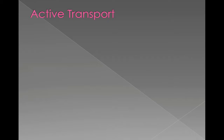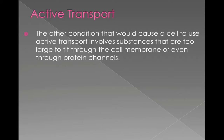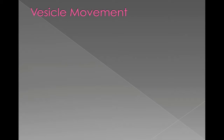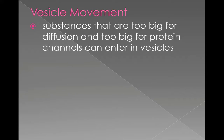That's one scenario where a cell must use active transport — moving from low to high, against the gradient. The other scenario is when substances are too large to fit through the cell membrane or even through those protein channels. In that case, a cell must use a sac called a vesicle. You learned about vesicles during your cell unit. A vesicle is a membrane-bound sac — a little packaging unit to carry something into or out of the cell that's too big to fit through the membrane.